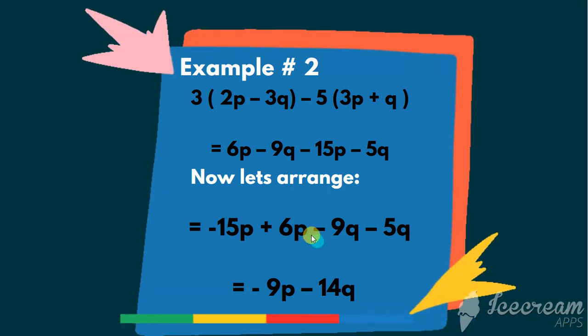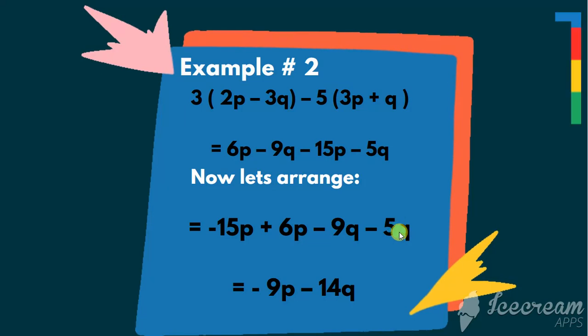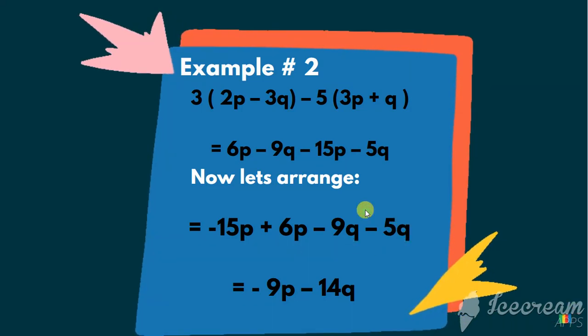Here are same signs. So if we have same signs, add and keep the sign. So we get minus 14q. Let's look at the next example.